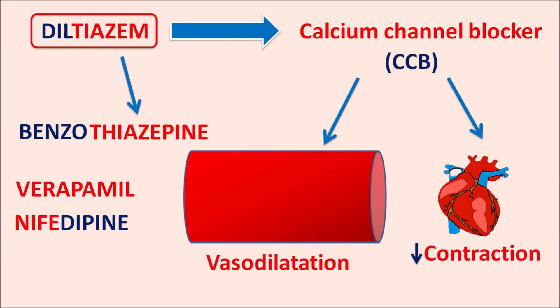Diltiazem can act on the vascular smooth muscle, so it can produce vasodilation, and it can act on the cardiac muscle where it is going to reduce contraction. Today in this video we are going to discuss how this drug acts, what are the important precautions, side effects, and clinical use of this drug.